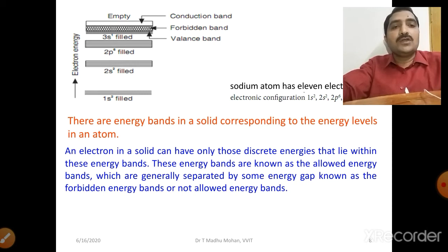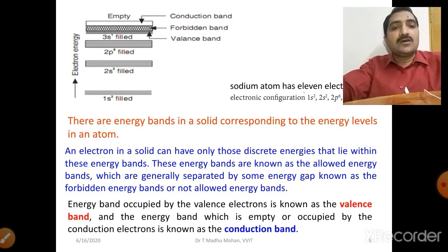An electron in a solid can only have energies lying within these energy bands, known as allowed energy bands, which are generally separated by energy gaps known as forbidden energy bands. The energy band occupied by valence electrons is the valence band, and the energy band which is empty or occupied by conduction electrons is the conduction band. In the diagram, the conduction band is empty and the valence band is filled with electrons.